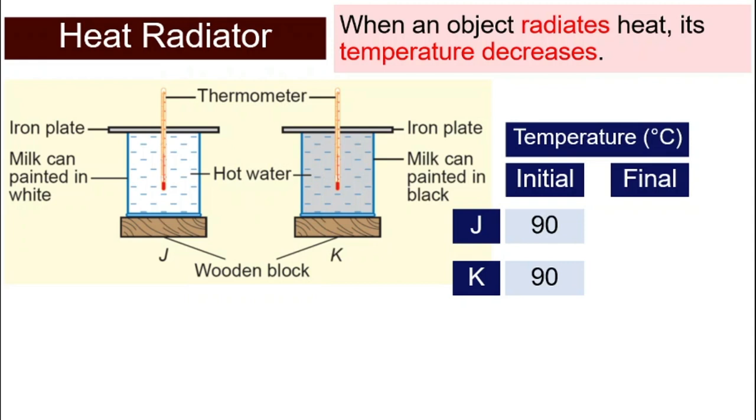So they should be cooler because they are beginning to radiate heat and lose heat to their surrounding. But do they lose the same amount of heat? We will find out. For J, the final temperature may be about 80 degrees Celsius after 10 minutes.